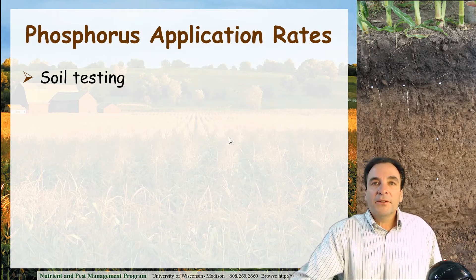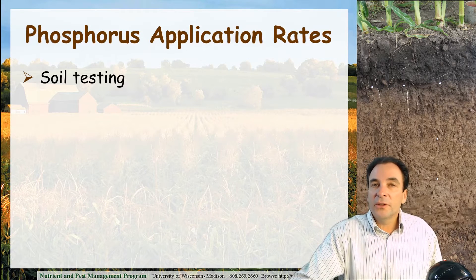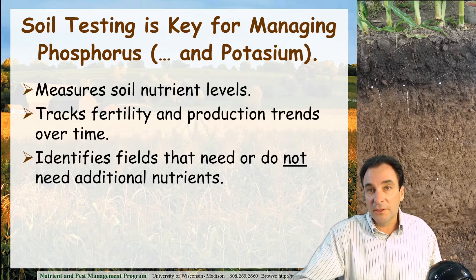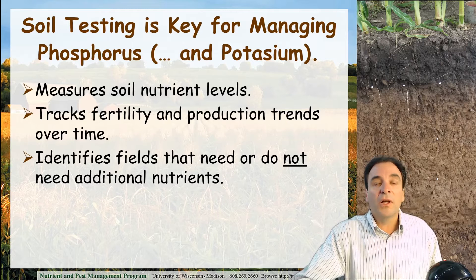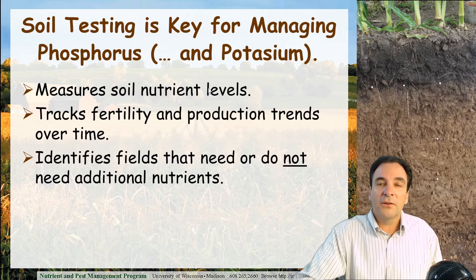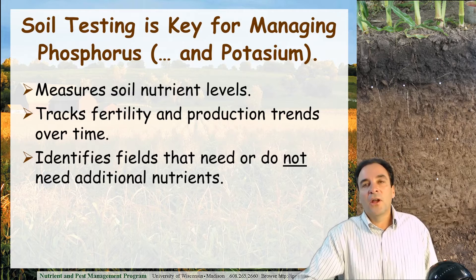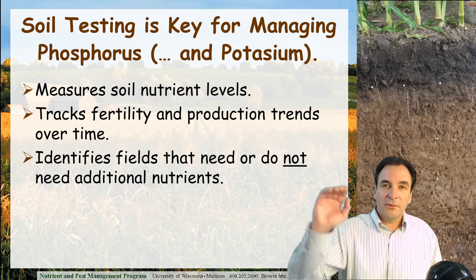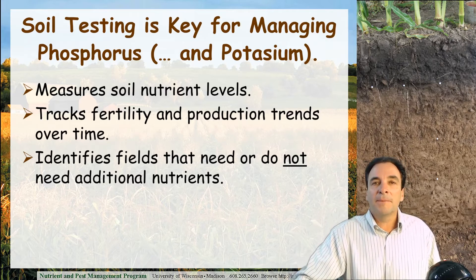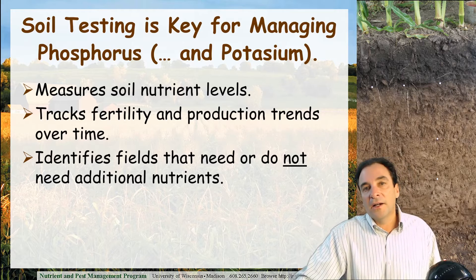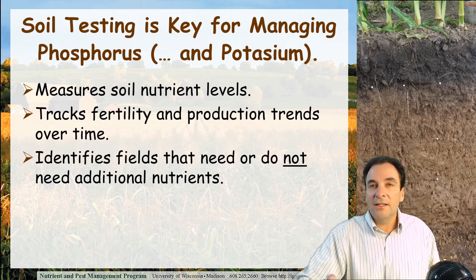Other important management practices for phosphorus are soil testing. Soil testing is critically important for assessing the inherent fertility of the cropland fields we're dealing with. It measures the inherent fertility of the soil and tracks our fertility and production trends over time — we can monitor whether we're building up or drawing down soil fertility. An added bonus of soil testing all the fields on a given farm is that it identifies fields that do and do not need nutrients.